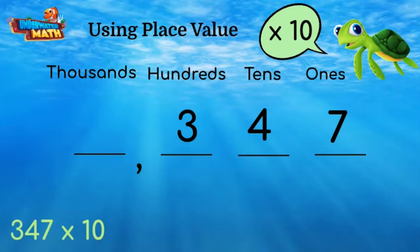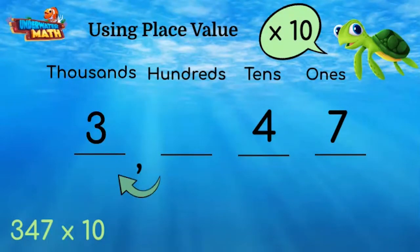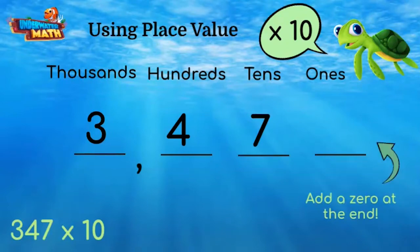When we multiply by 10, the value of each digit increases by one place value, which means each digit moves one spot to the left. Then we place a zero at the end of our number in the ones place.